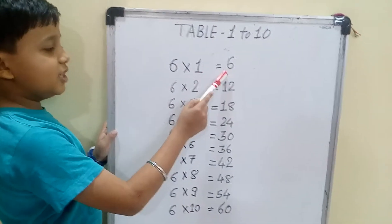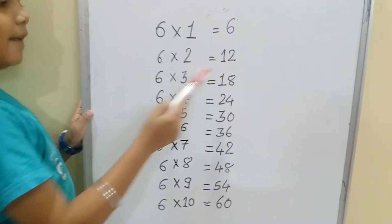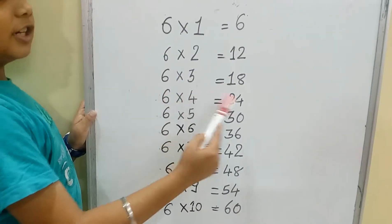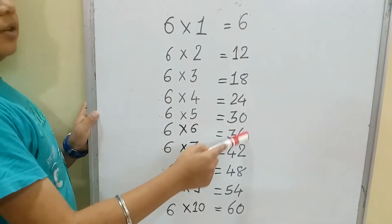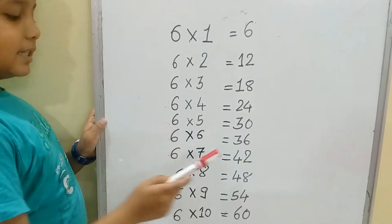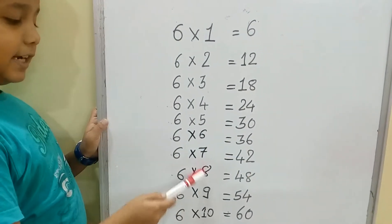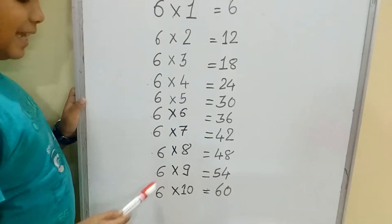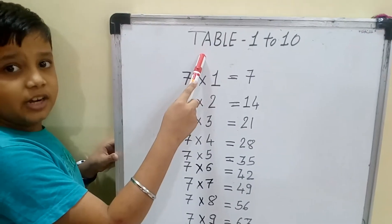Children, now children, you repeat with me. 6 one is 6, 6 nine is 54, 6 ten is 60.